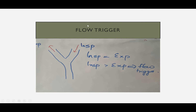Flow trigger: there is the inspiratory limb and the expiratory limb. Whenever there is no breathing effort from the patient, the inspiratory flow equals the expiratory flow. Whenever the patient takes a breath, some of the inspiratory flow goes into the patient's lungs, so the inspiratory flow becomes greater and the expiratory flow becomes less. When the expiratory flow is less than the inspiratory flow, the ventilator triggers a breath — this is the flow trigger. Flow-triggered breathing combines continuous flow and demand flow mechanisms to reduce the inspiratory effort imposed on the patient. It is considered more sensitive to the patient's inspiratory effort and generally requires less inspiratory work than pressure triggering.